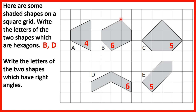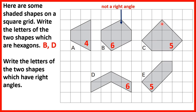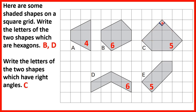If we look at B, this angle here perhaps you think might be a right angle, but it's not. The way we know is by counting lines down and across. If we go down and across one way, we go one down and one across. But if we go down and across the other way, we go down one but across two to get to the line, so this angle is not a right angle.